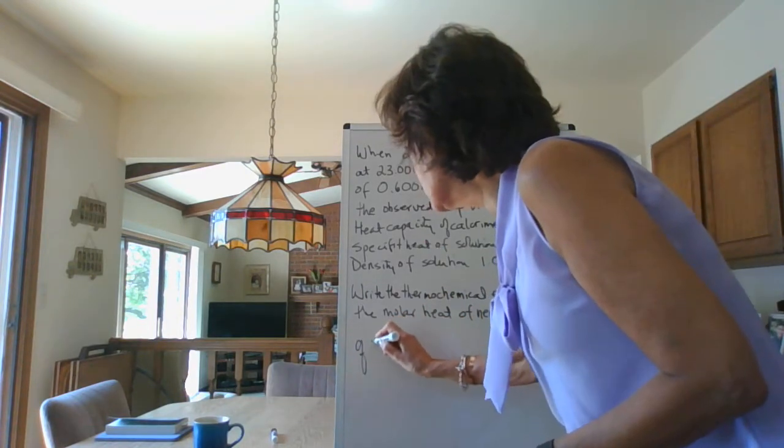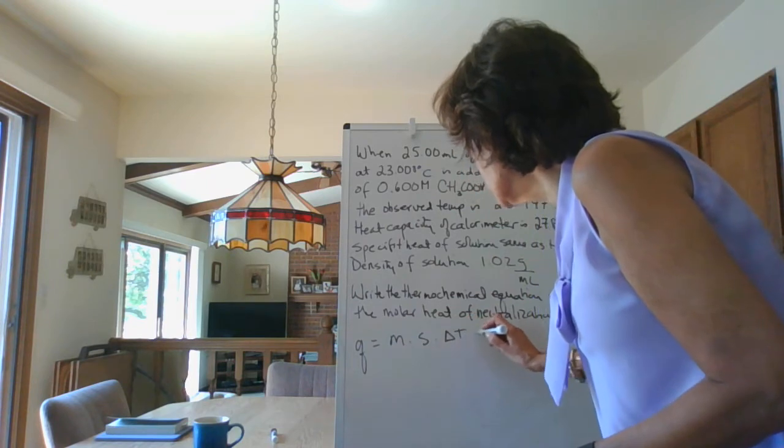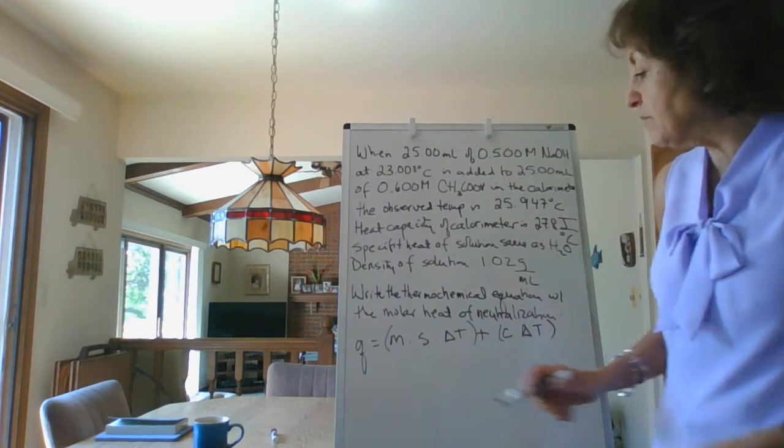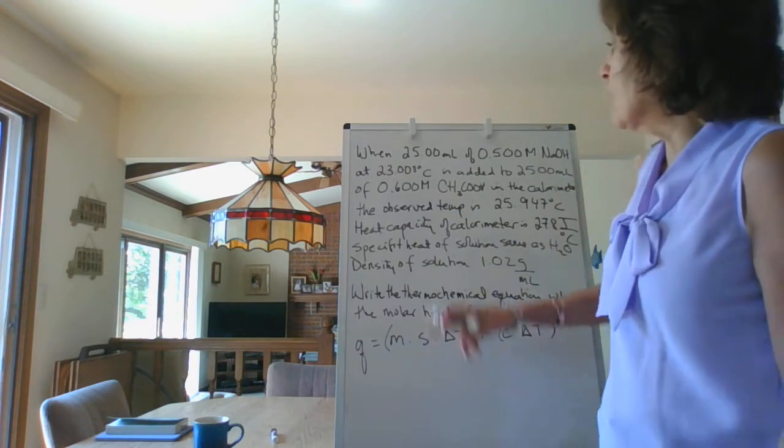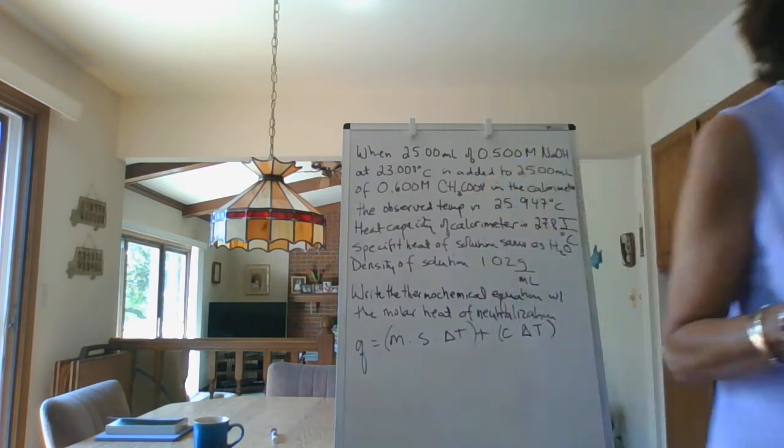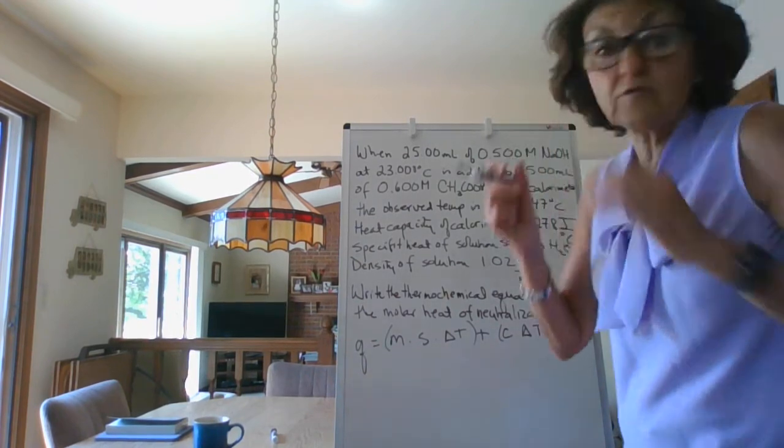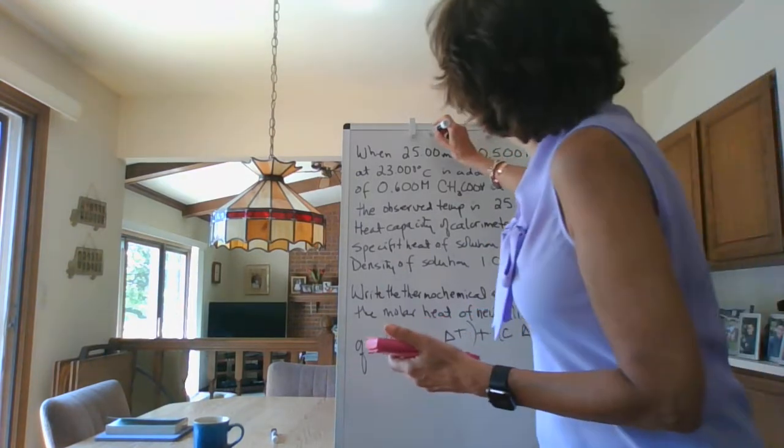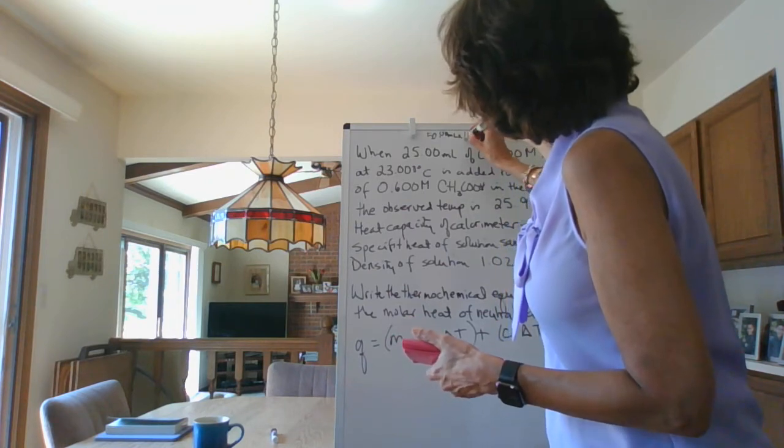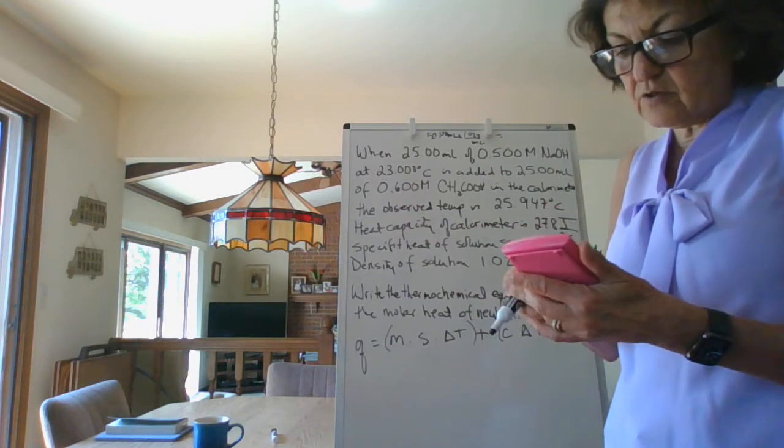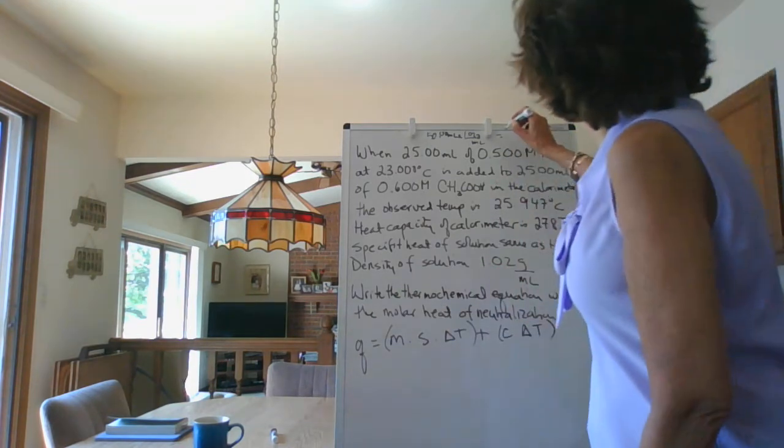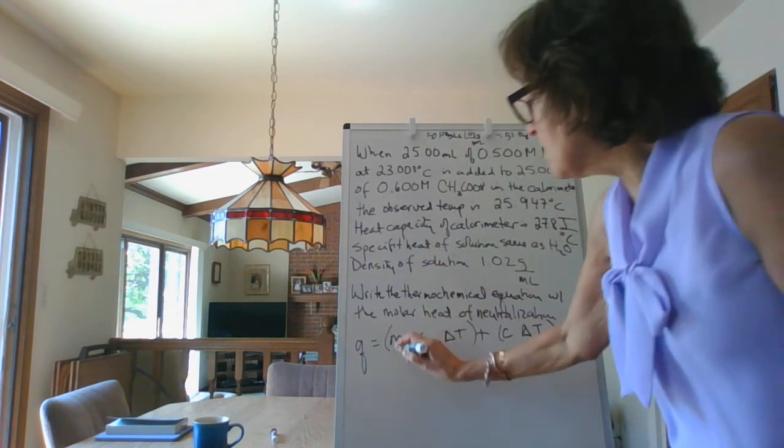First things first: q equals m times s times delta T plus c times delta T. What is the mass of the solution? Well, I've got 25 mils and 25 mils, so you add them together, that's 50 mils. The density is 1.02, so 50.00 mils times the density as a conversion factor, 1.02 grams per mil. 50 times 1.02 equals 51 grams. So our mass is 51 grams.